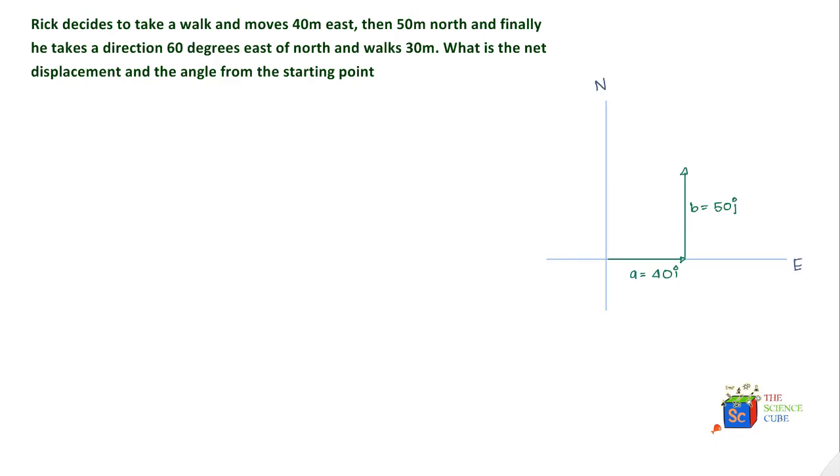Then he decides to walk 60 degrees east of north and he walks 30 meters, so his displacement vector would look something like this. What he's done is he has walked at an angle of 60 degrees, in which case this would be 30 degrees. Let's call this vector C.